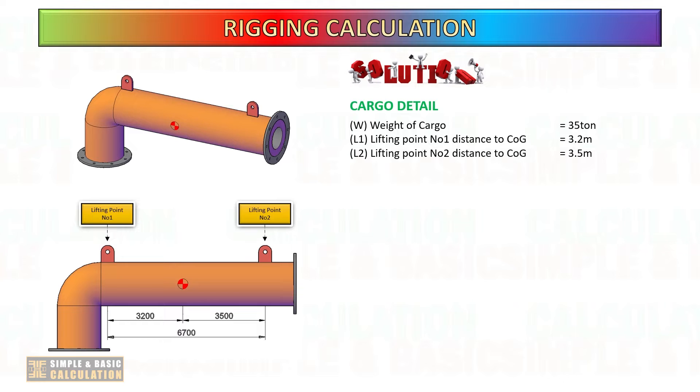In this example, the cargo that needs to be lifted has two lifting points and weighs 35 tons. However, the center of gravity of the cargo is not located in the center as shown. Now, we will determine the load on each lifting point based on the provided dimension.